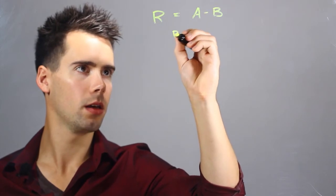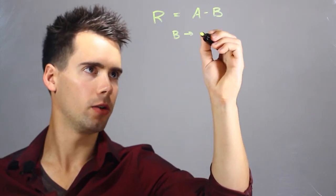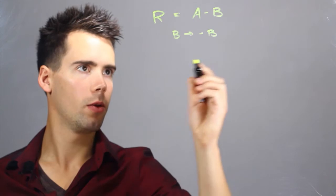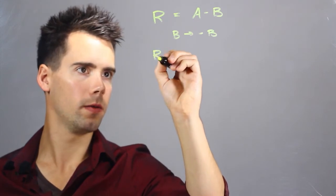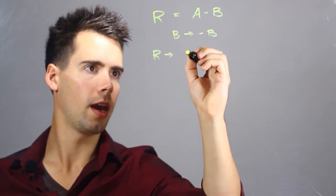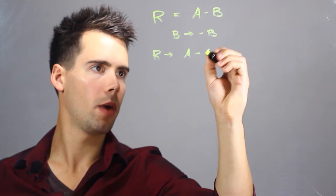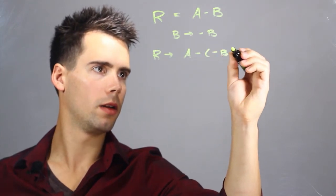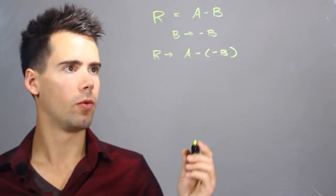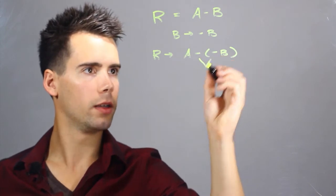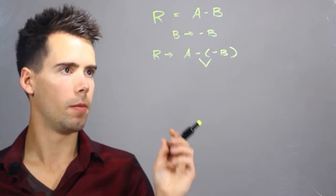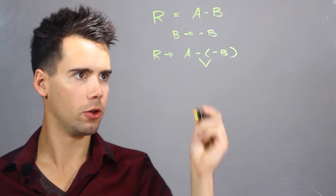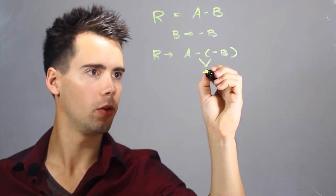So if B actually goes to a negative B, we find that R goes to A minus negative B. Now the rule is that when you have two negatives, a negative subtracted, you find that it actually turns into a positive.